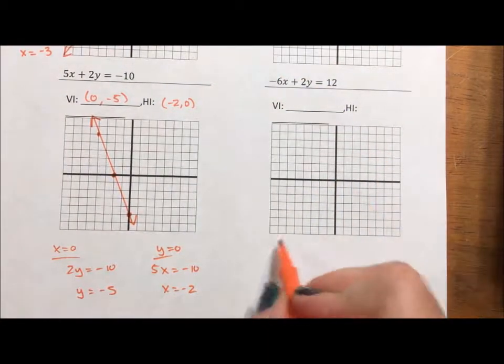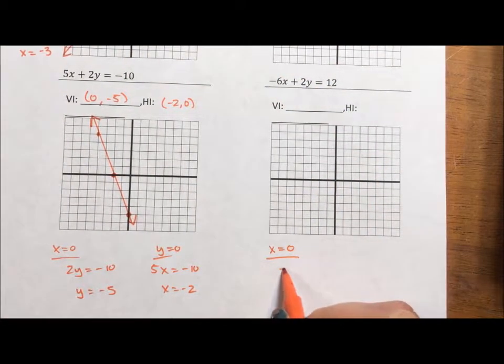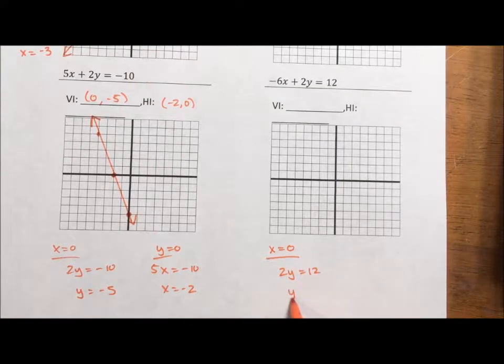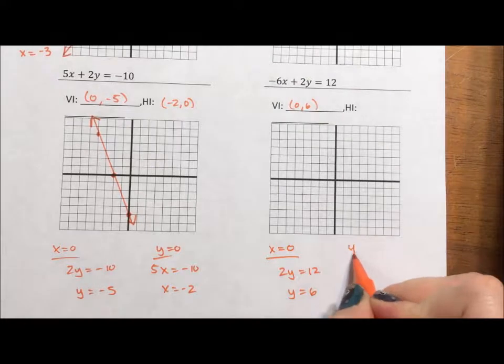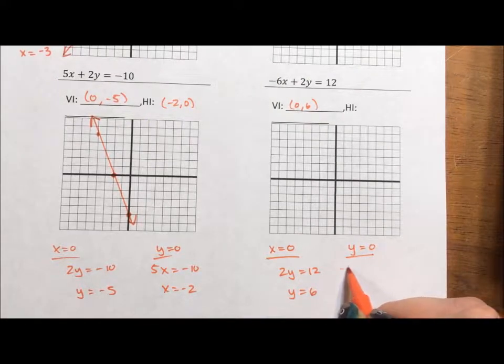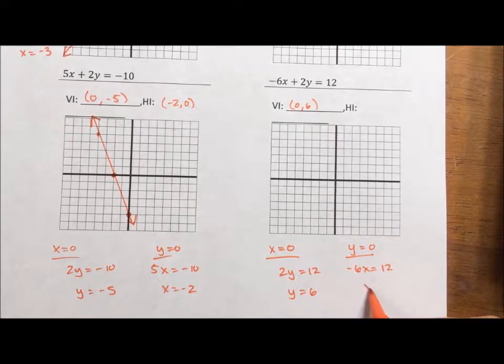Okay, and last but not least, if x is equal to 0, then 2y equals 12 or y equals 6. If y equals 0, then negative 6x equals 12 or x equals negative 2.